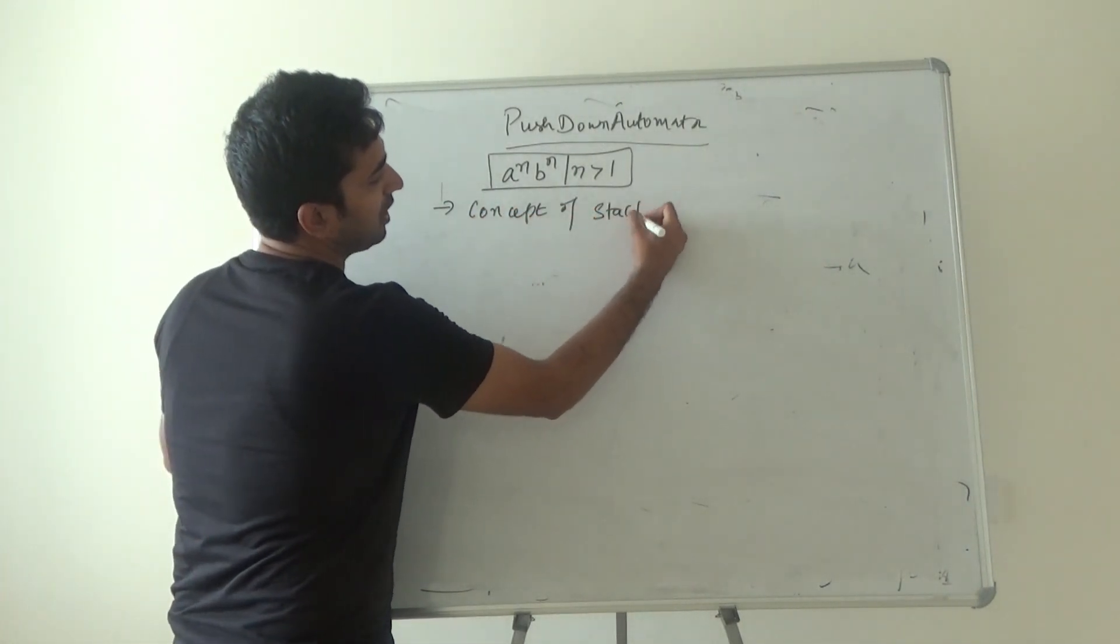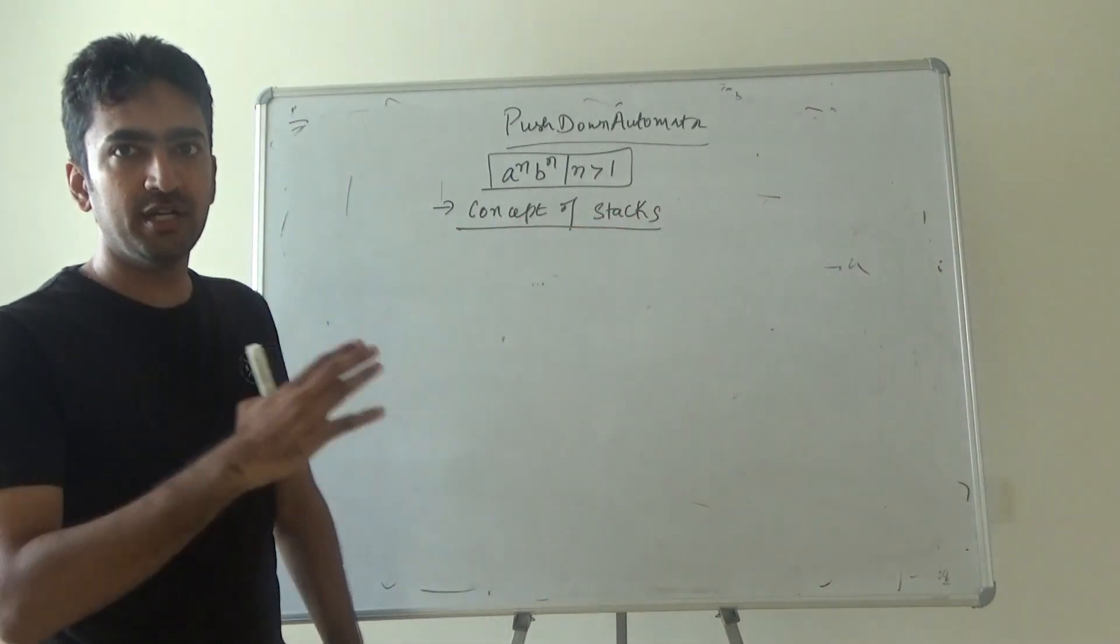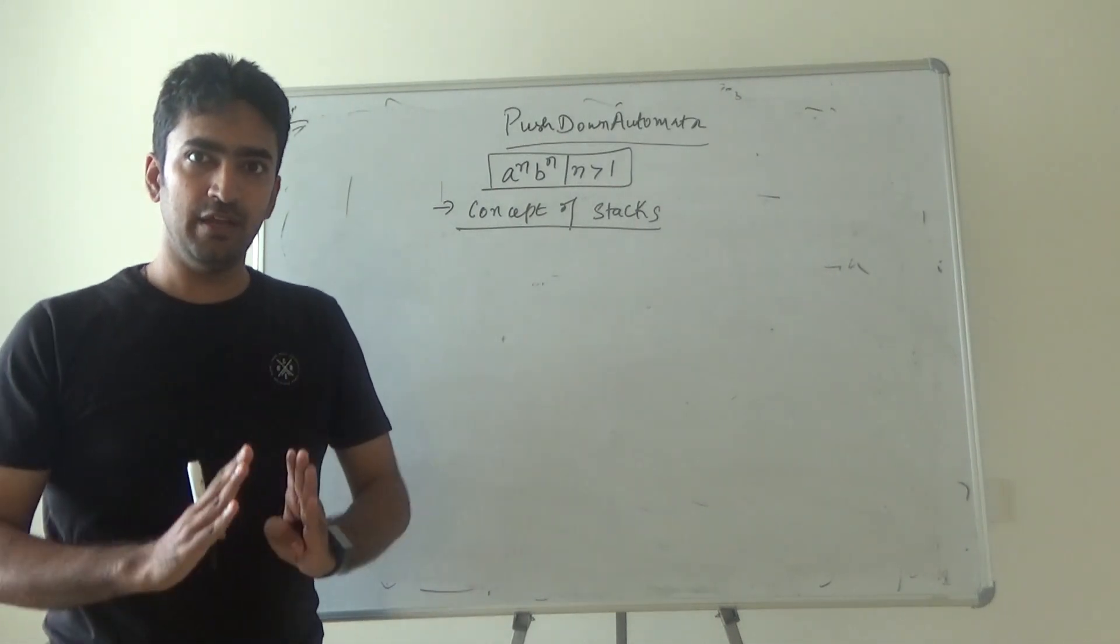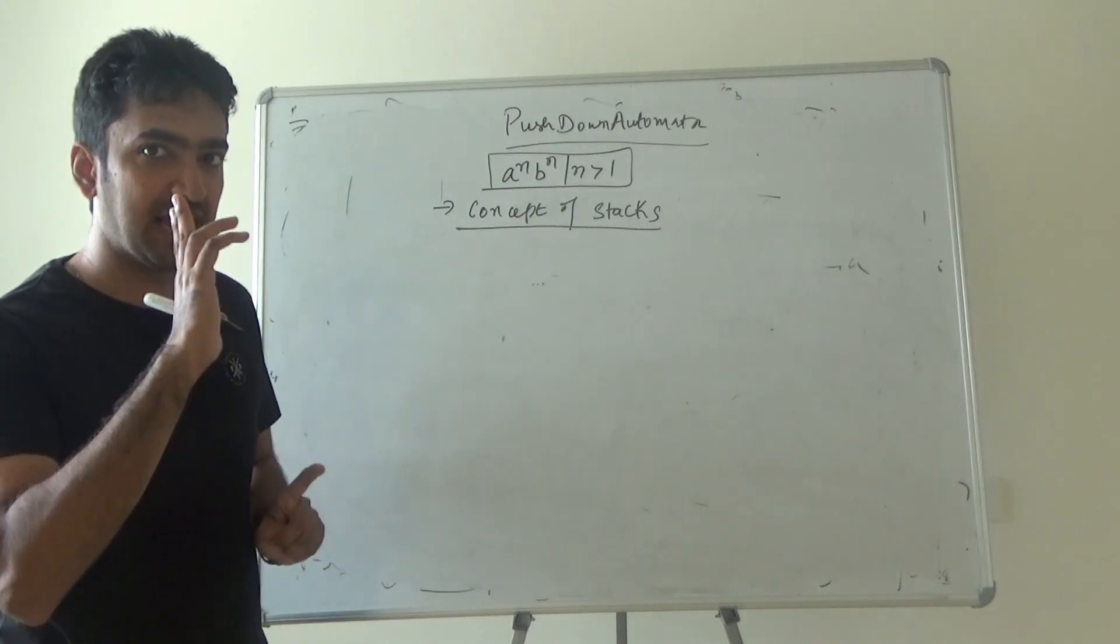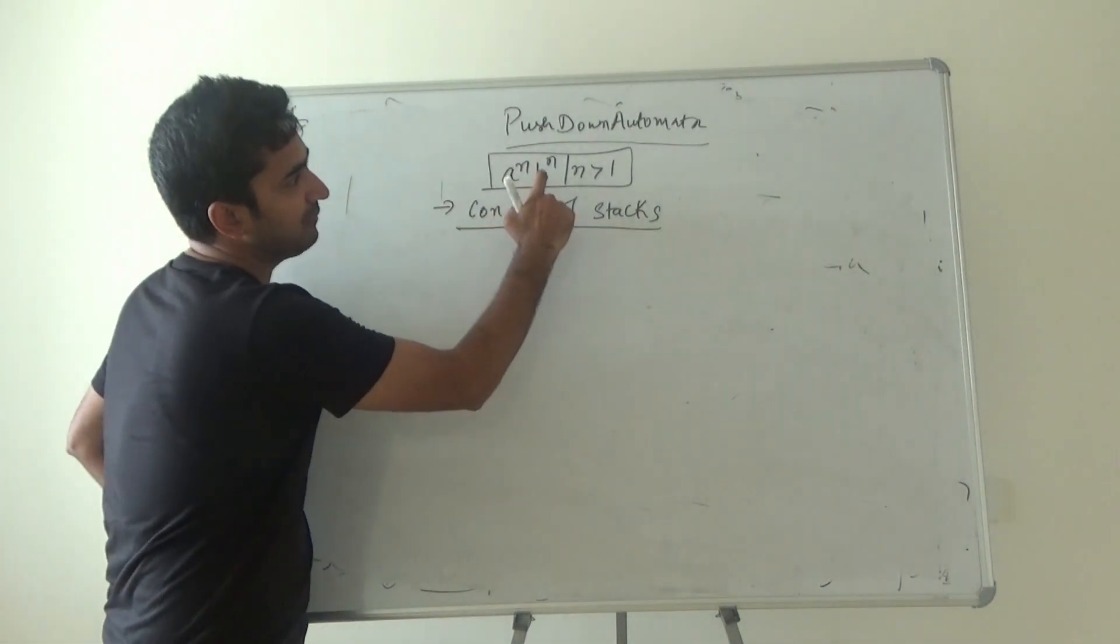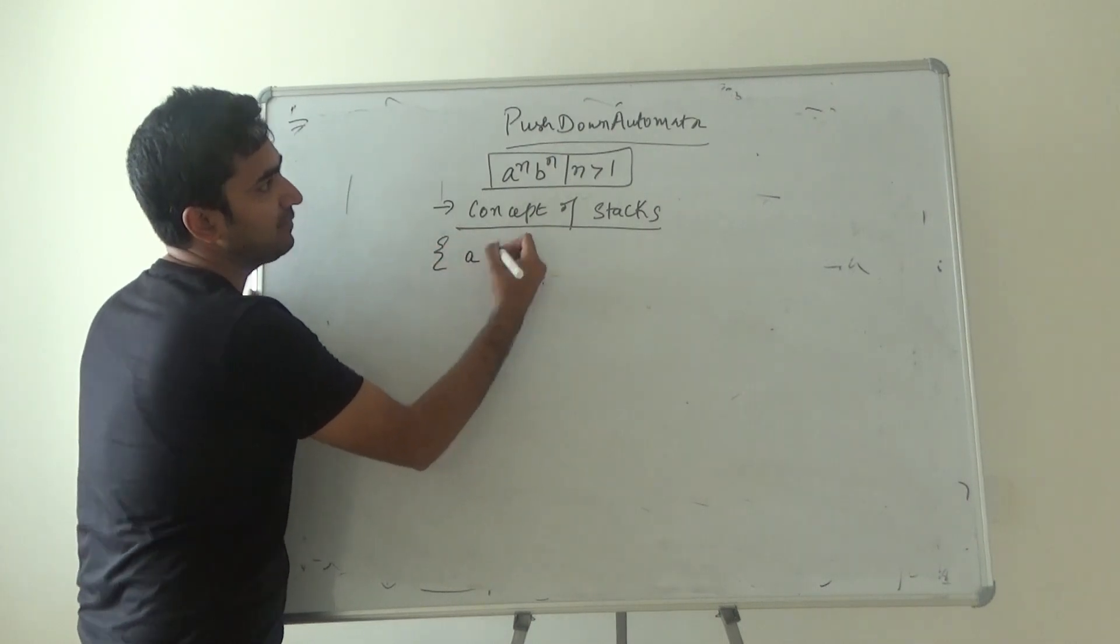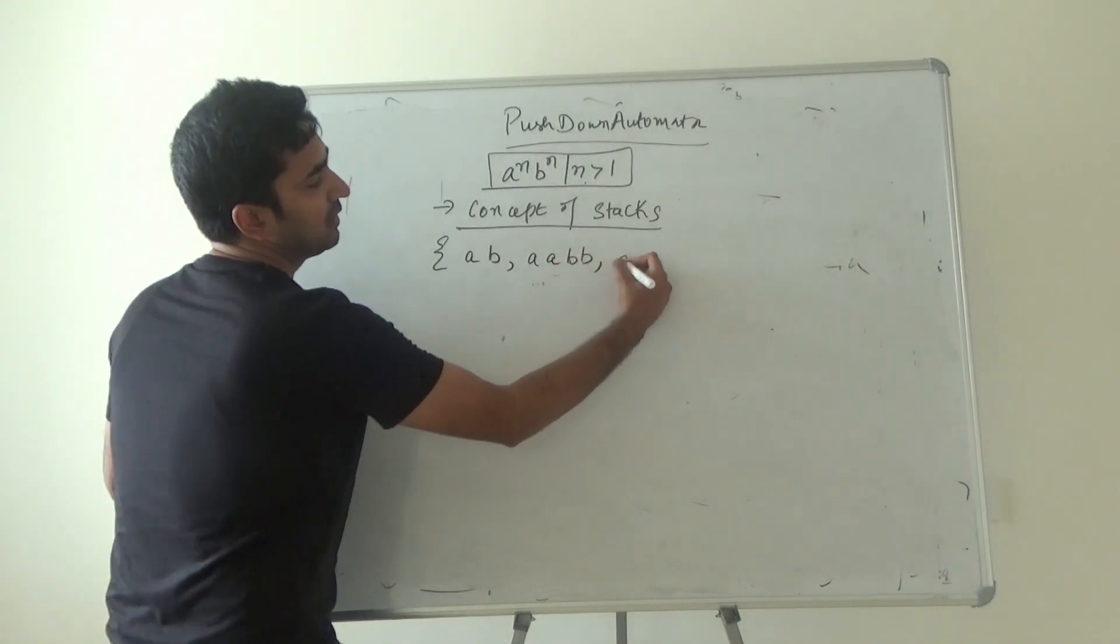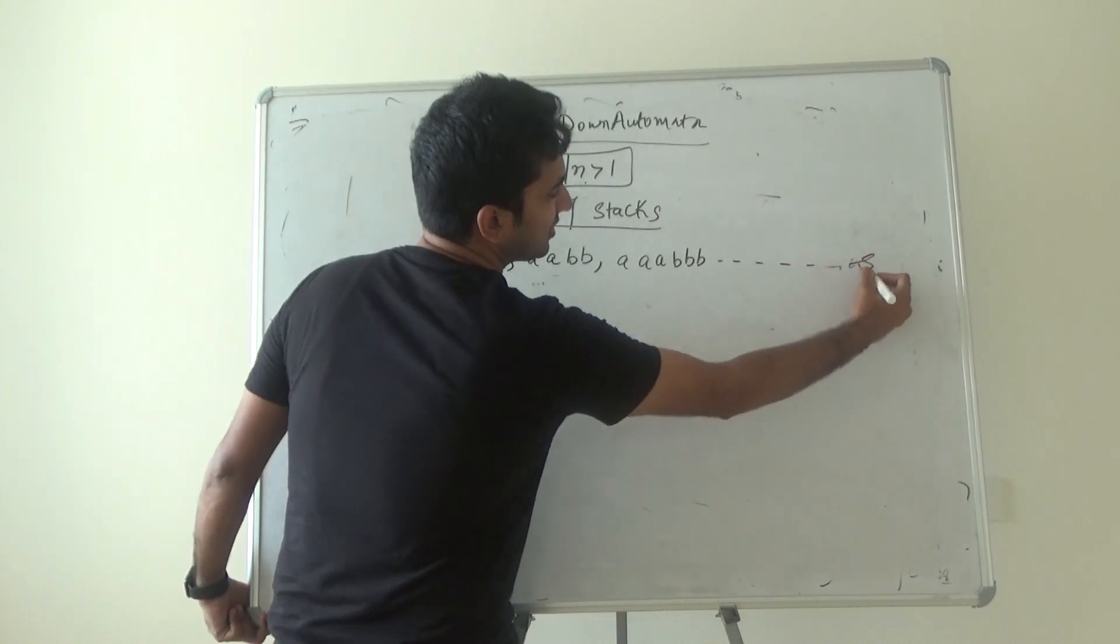Now the best learning model in pushdown automata is that if there is something which is required to be matched. What is the language? I talk about a bar and b bar n. If I create strings, I have a b because n value is 1. I can have 2 a's, 2 b's, 3 a's, 3 b's and these are all infinite strings.